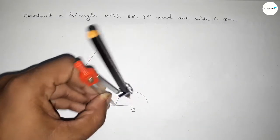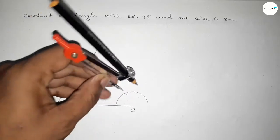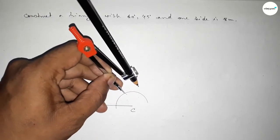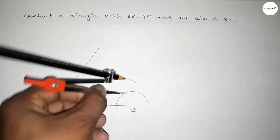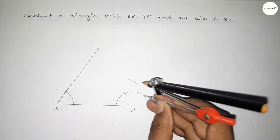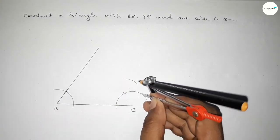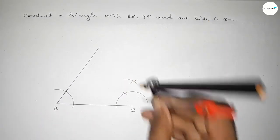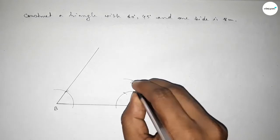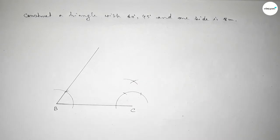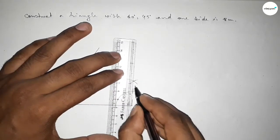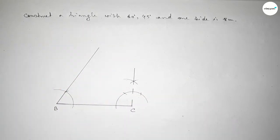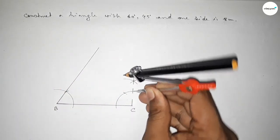Putting the compass here with the same length and cutting here, then putting the compass here and cutting here again. Drawing an arc and putting the compass here with the same length and cutting here, so both the curves intersect at a point. Joining this to get a 90 degree angle first.